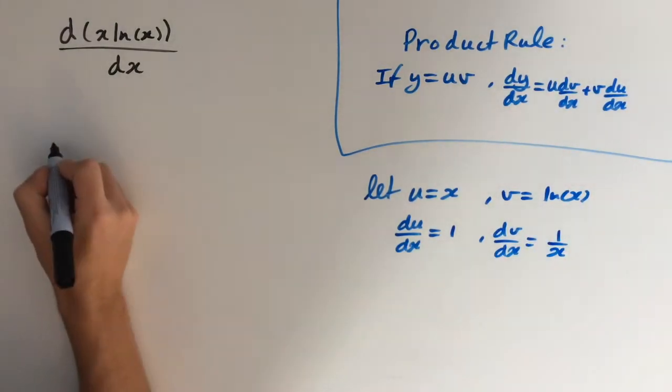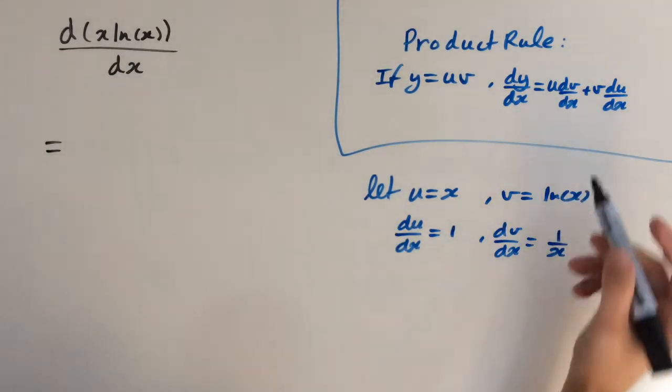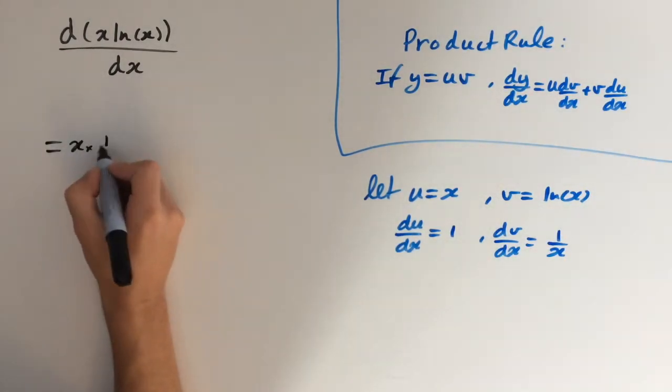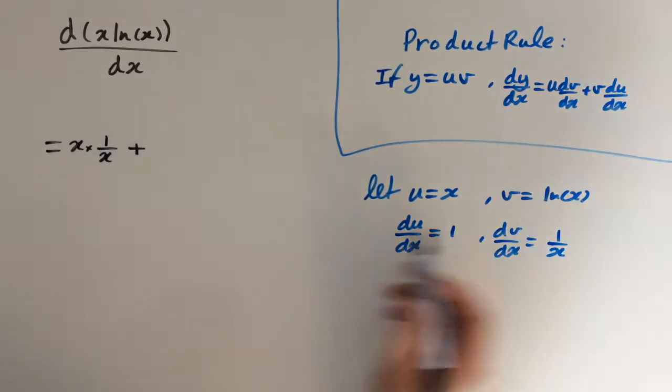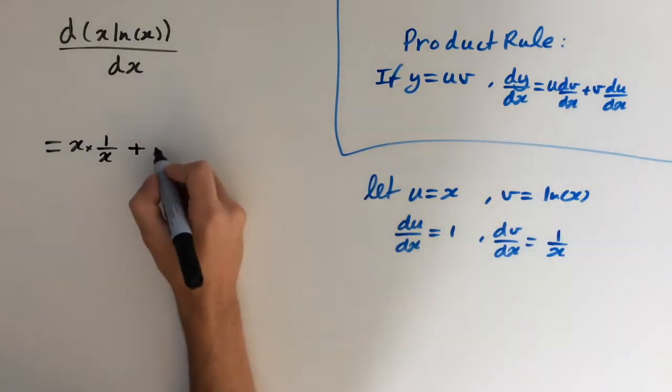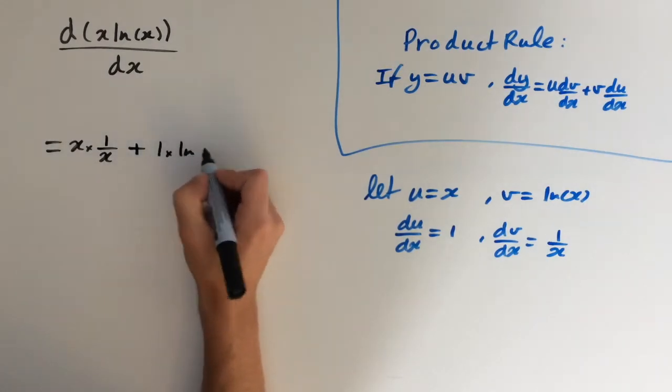So let's plug this in, and this is going to give us u times dv dx, which is x times 1 over x, plus v times du dx. So ln of x times 1, or 1 times ln of x.